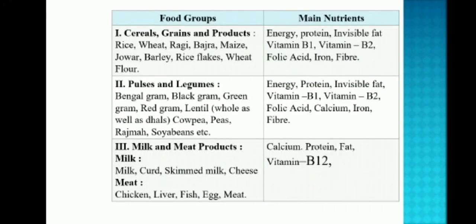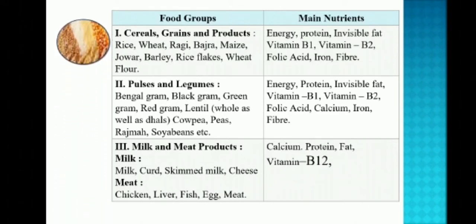Coming to the elaborate food groups: in the first group, cereals, grains and products — rice, wheat, ragi, bajra, maize, jowar, barley, rice flakes, wheat flour. It contains a lot of nutrients like energy, protein, invisible fat, vitamin B1 and B2, folic acid, iron, and fiber.